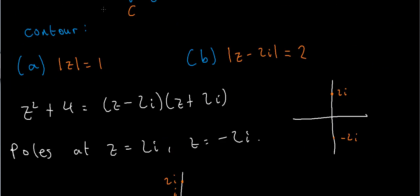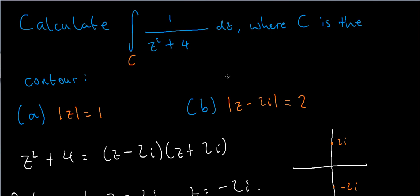For the second contour, I'm asked to integrate my function over the contour mod z minus 2i equals 2. Well, first of all, what does this contour look like? So let's draw the contour mod z minus 2i equals 2. So what does this look like? Well, it's a circle of radius 2, and it's centered at 2i. So its center is at 2i, and it has radius 2. So it's going to look something like this.